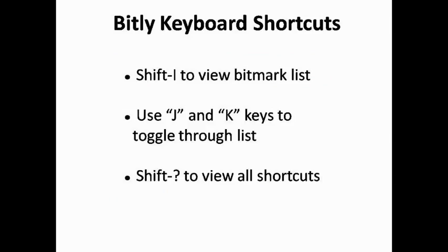Bitly offers several keyboard shortcuts to make working with short links quick and easy. To view your bitmark list, hit Shift-I. To change your privacy settings, press P while you have a bitmark selected. Use the J and K keys to toggle through your bitmarks. Hit the N key to create a note and press T to edit the title of your short link. For a complete list of keyboard shortcuts, press Shift-Question Mark while you are logged in.